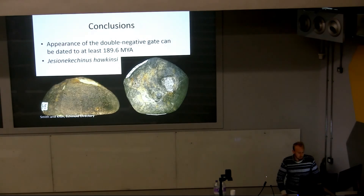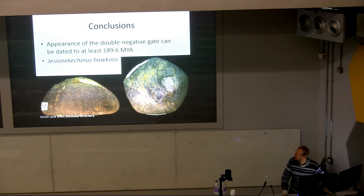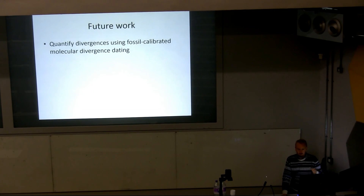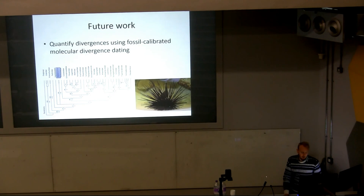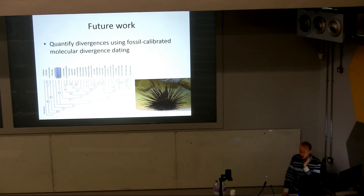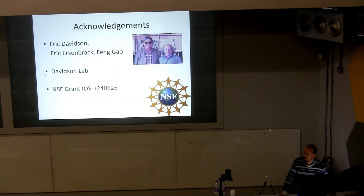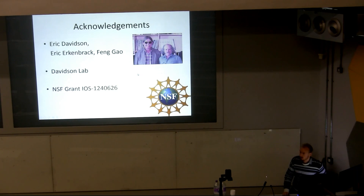In conclusion, we can date the appearance of this double negative gate to 189.6 million years ago based on the presence of Jessenikinus hawkinsi. This is very preliminary data—more of a framework. I'd like to quantify these divergences better using fossil-calibrated molecular divergence dating. We've also been working on a diadematoid echinoid, Centrostephanus coronatus, which plots down here—we've done RNA-seq and I'm hoping to do perturbation experiments to establish whether the double negative gate is present there this coming summer. I'd like to thank Eric Davidson for really getting me thinking about these things, and our collaborators in the Davidson Lab and the National Science Foundation.